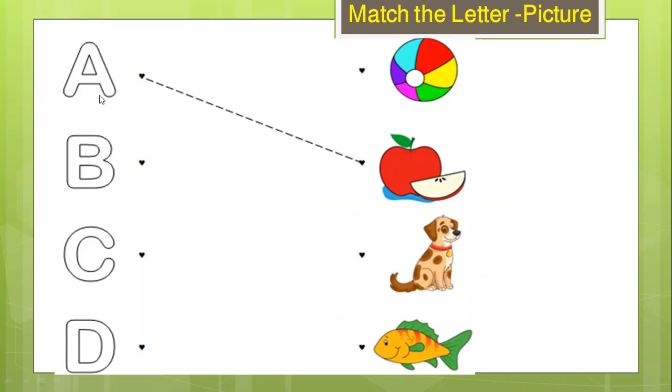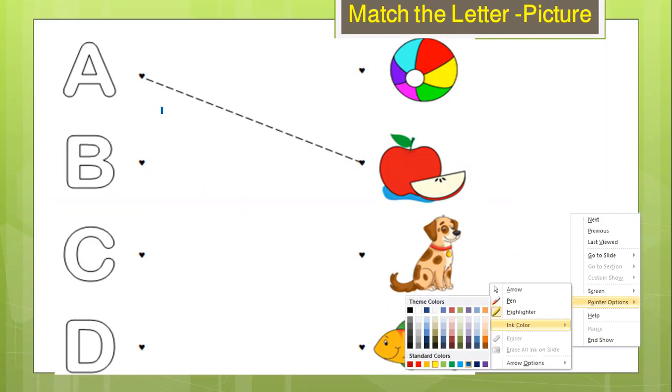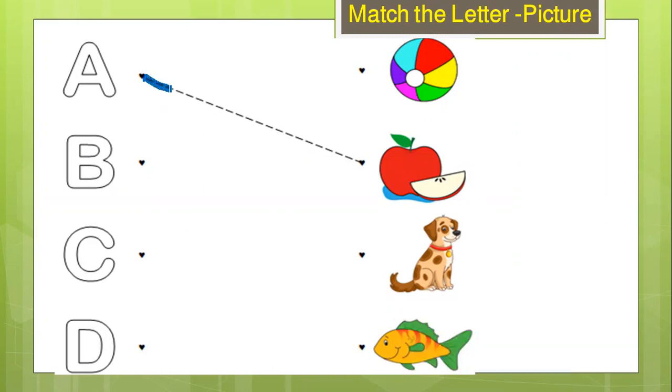For example, the first letter is the letter A, right? So A is for Apple. We match A to the Apple. So now let me match it. Trace this one to match A is Apple.